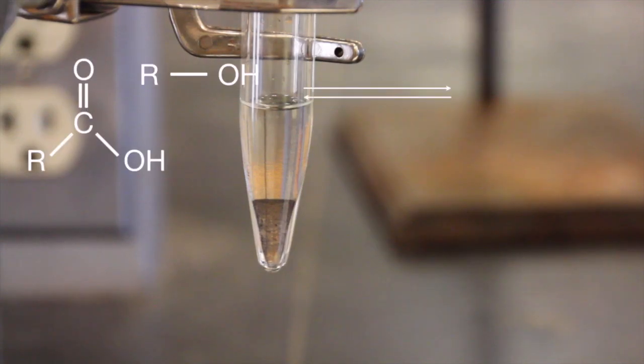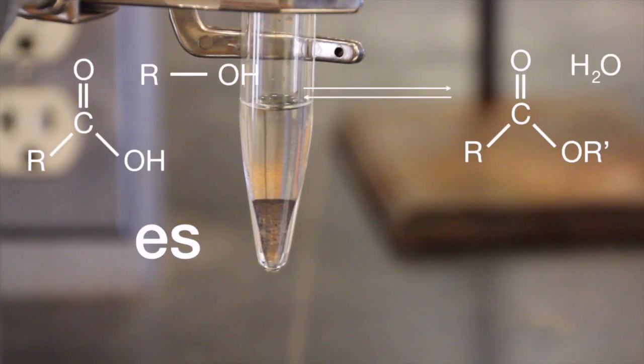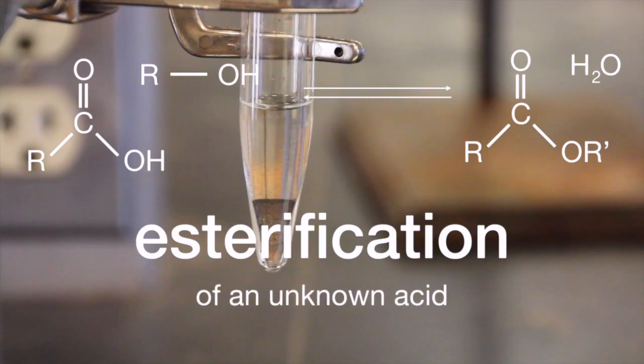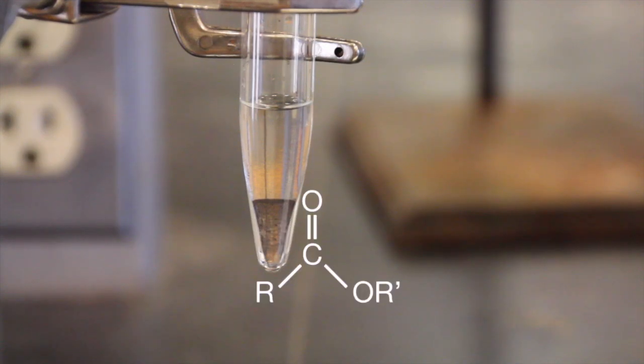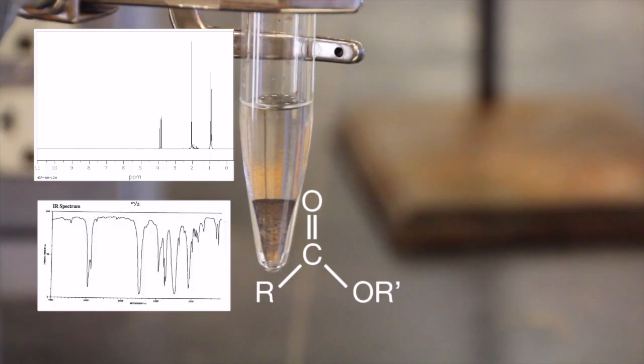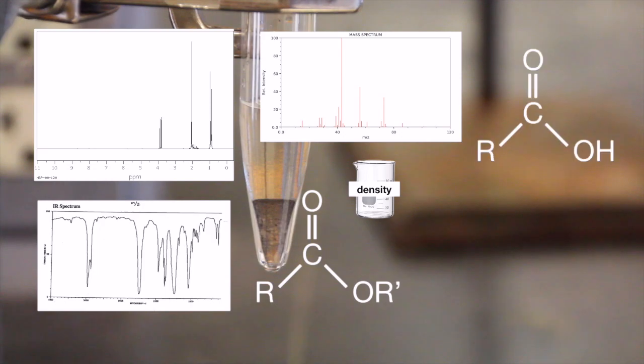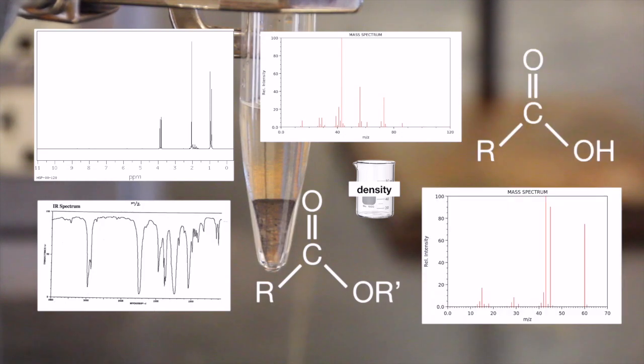In today's lab, you will synthesize an ester from an unknown carboxylic acid and an unknown alcohol. To analyze and confirm the synthesis of your ester, you should take an IR and NMR spectra of the compound, analyze its odor, and determine the compound's density. You will also be given literature spectra to aid you in your identification, including a mass spectrum of your ester and a mass spectrum of your acid.